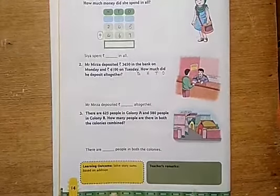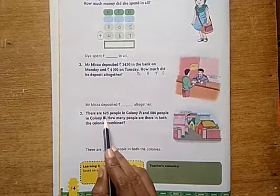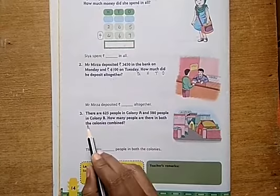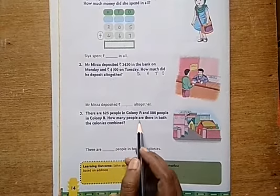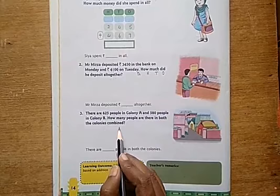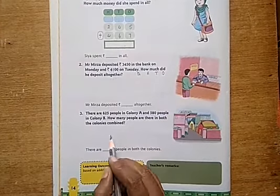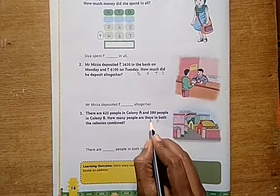Third one: There are 625 people in Colony A and 580 people in Colony B. How many people are there in both the colonies combined? Here also we should use addition. First of all, write down place values here: ones, tens, hundreds.